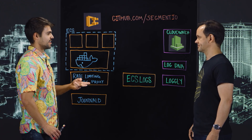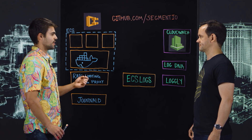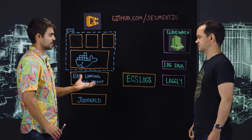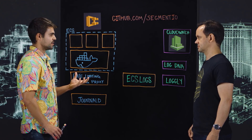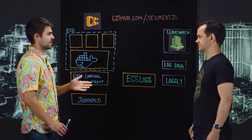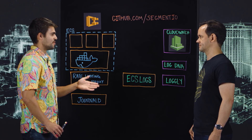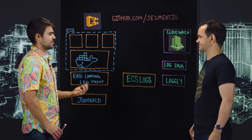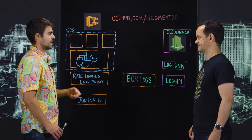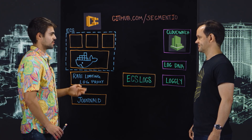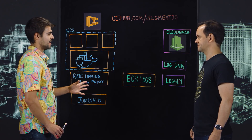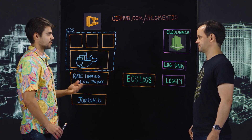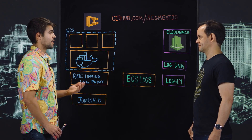The second is the search use case, where you want to understand: I've got some sort of query, how can I find this needle amongst this haystack? And then the third is the tailing use case, which I'll touch on a little bit today, where we want to understand what's going on in production right now.